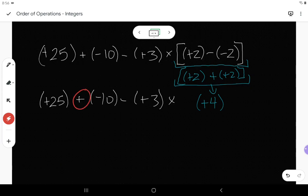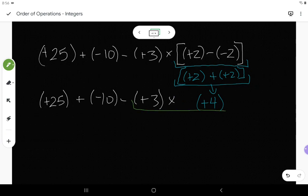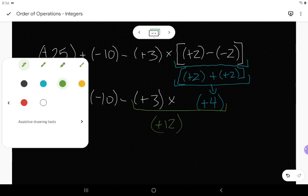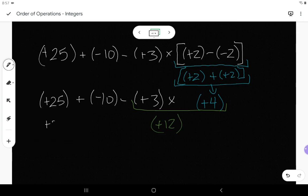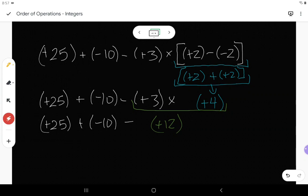So now I have addition, subtraction, multiplication. I must do the multiplication next. The multiplication between positive 3 and positive 4 would give me positive 12. And then again, I still have everything else that I have not used. So the 25 plus negative 10, and then that subtraction.